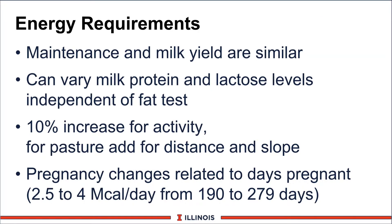Let's look at the energy requirements. There are some that have changed and some that have stayed the same. Maintenance and energy yields are very similar, so it takes about the same amount of energy to produce a pound of 4% fat-corrected milk in the old NRC as in the new NRC. But when you use the model, you can vary milk protein and milk lactose independent of fat tests. So instead of having that normal 85-86% ratio, if your herd has an unusually high protein compared to fat tests or lactose, you can actually enter the actual amount. You can enter protein on both a crude and/or true protein basis depending on how your labs are reporting the information.